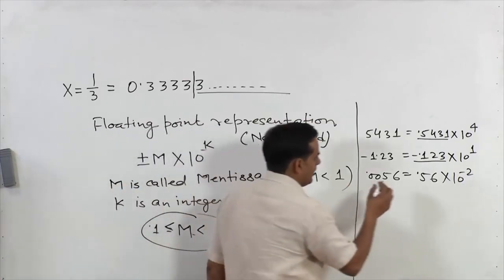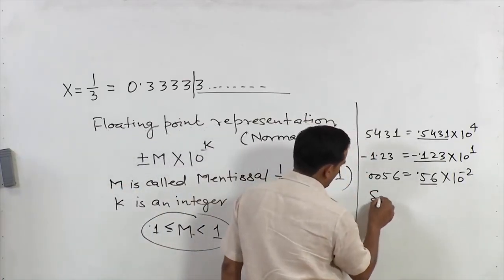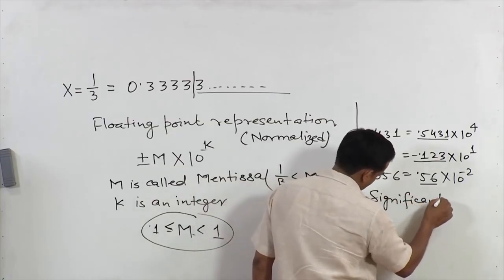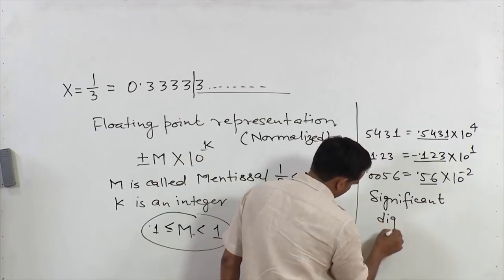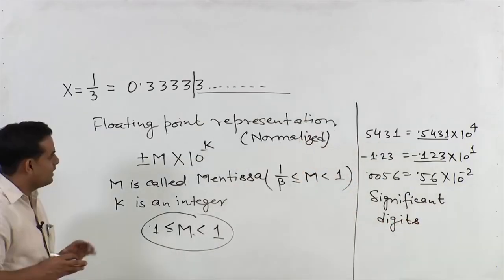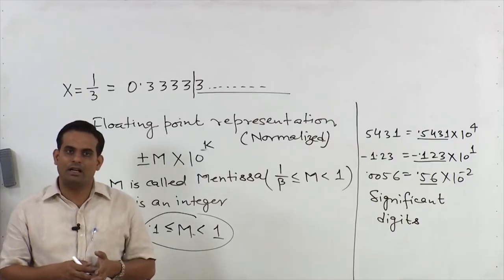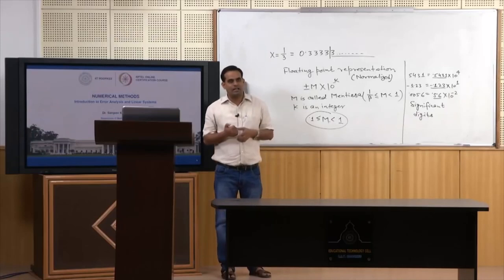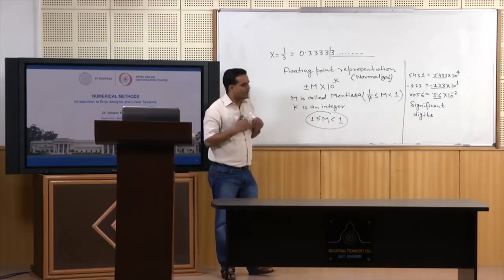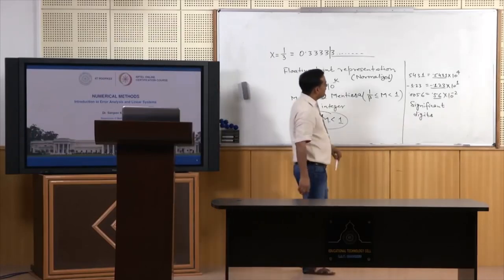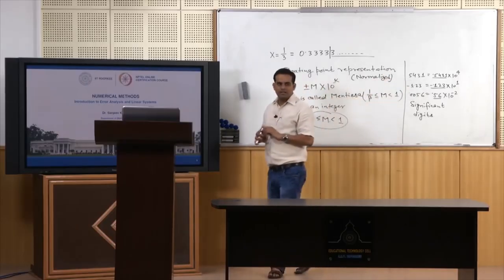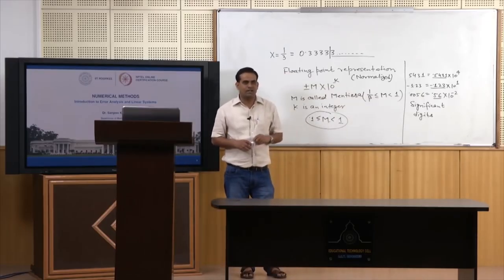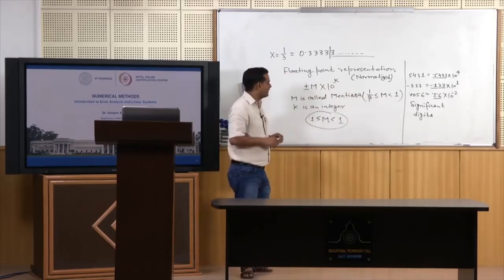The digits in the Mantissa are called significant digits. So if someone gives you a number and asks how many significant digits it has, you need to write the number in floating point representation, and then the number of digits in the Mantissa are the significant digits in the given number.